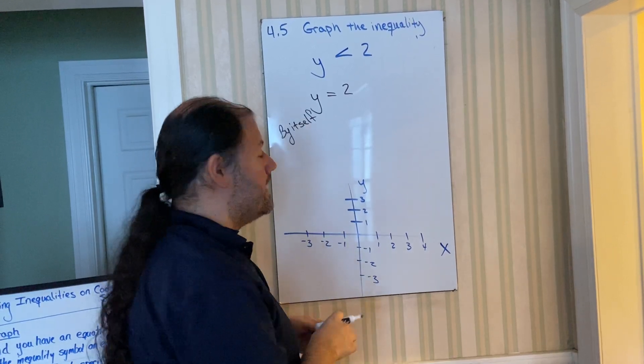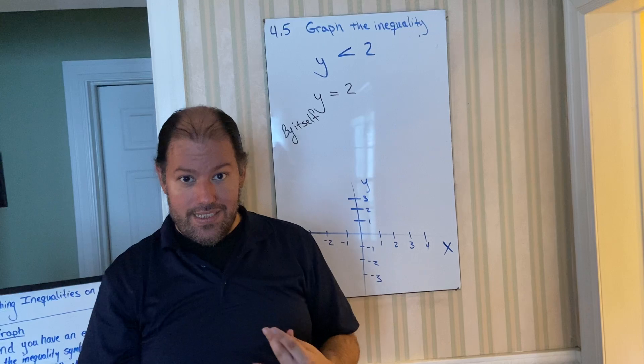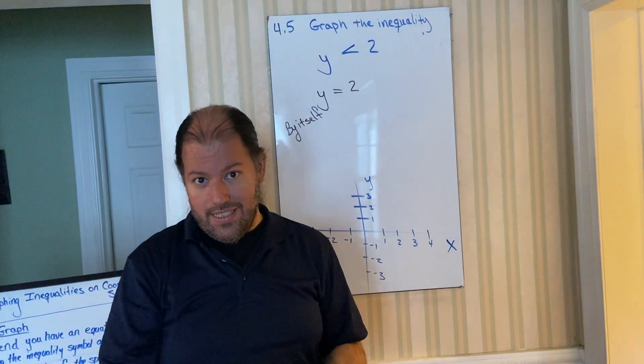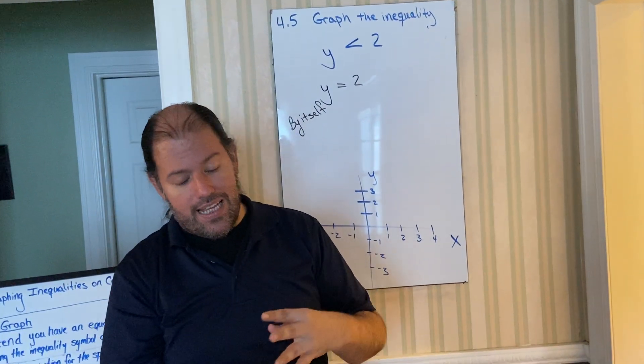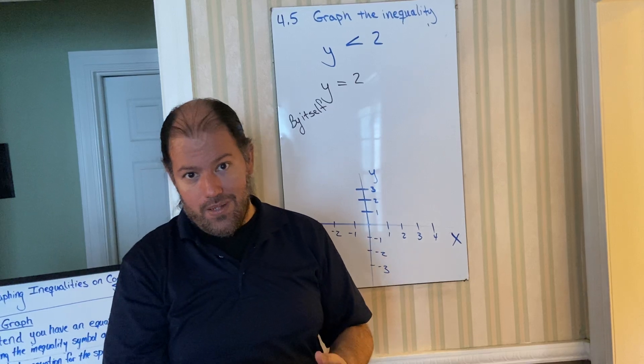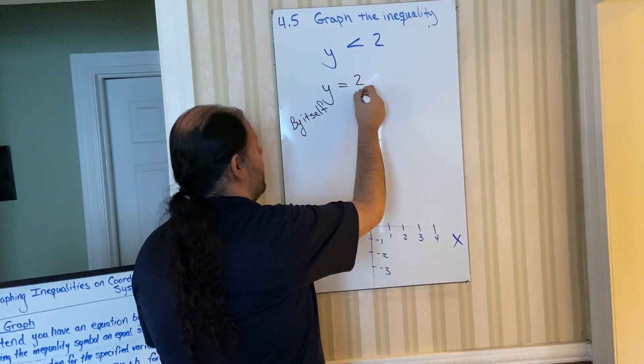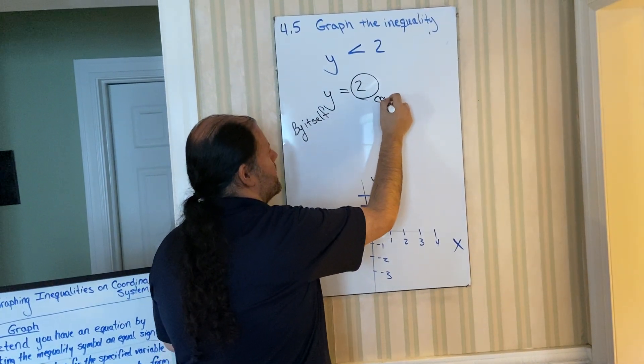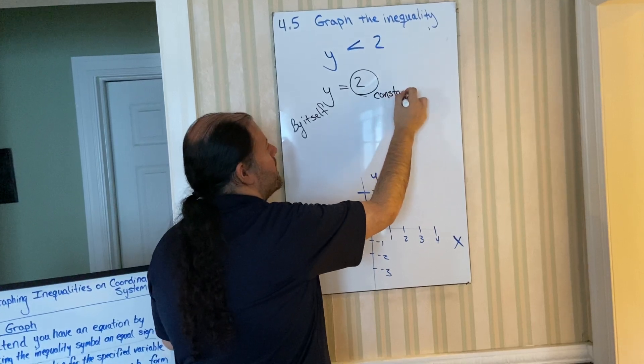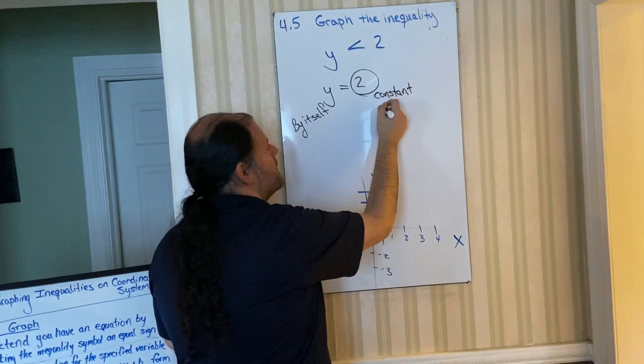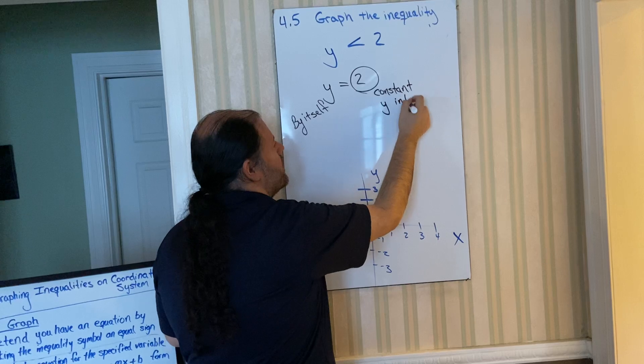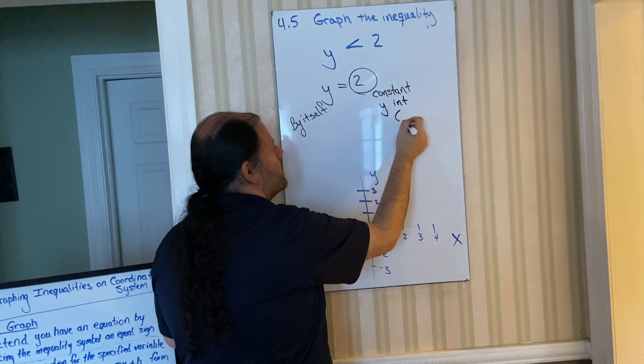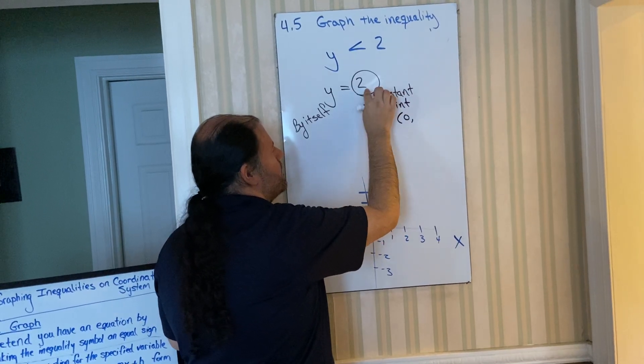Step three is, what is the constant? What is the x coefficient? Because that gives us the slope and the y-intercept. Well, this is a constant. So this is your y-intercept. Y-intercept is an ordered pair. Zero, comma, whatever the number is.